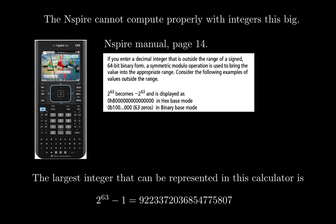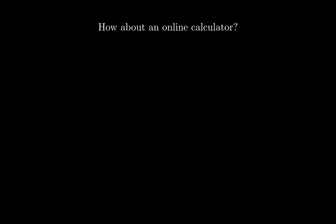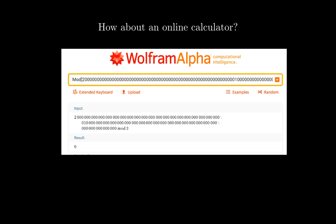The largest integer that can be represented in this calculator is 2 to the 63 minus 1, which is a 64-bit integer. How about an online calculator? That would be no problem because using Wolfram Alpha, for example, would allow you to type that big number, and you could check for divisibility.